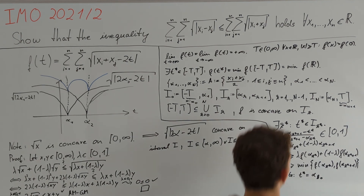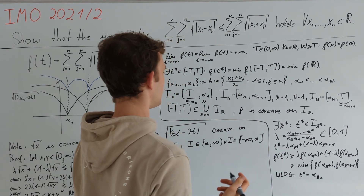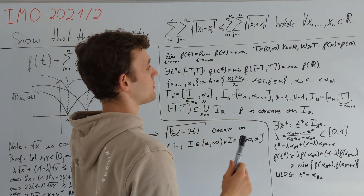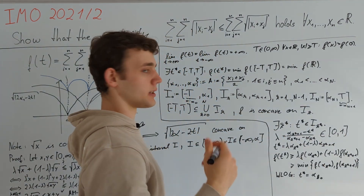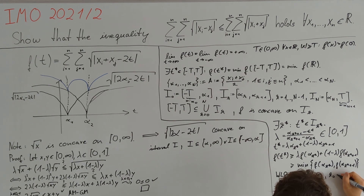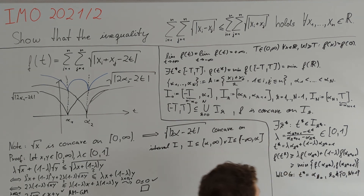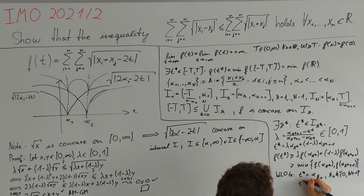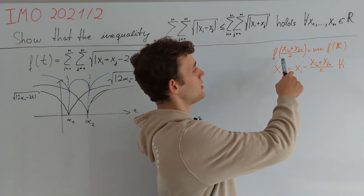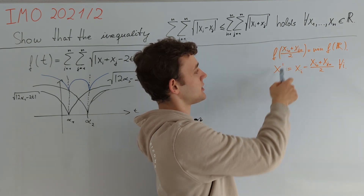We also need to rule out that k₀ is not 0 or N+1, but this is true because f(T) and f(−T) are greater than f(0) and therefore not the global minimum of f. So k₀ is not 0 or N+1, and finally we get what we wanted: t* = (xᵢ₀ + xⱼ₀)/2 for some indices i₀, j₀. We have established that f attains its global minimum at some (xᵢ₀ + xⱼ₀)/2.